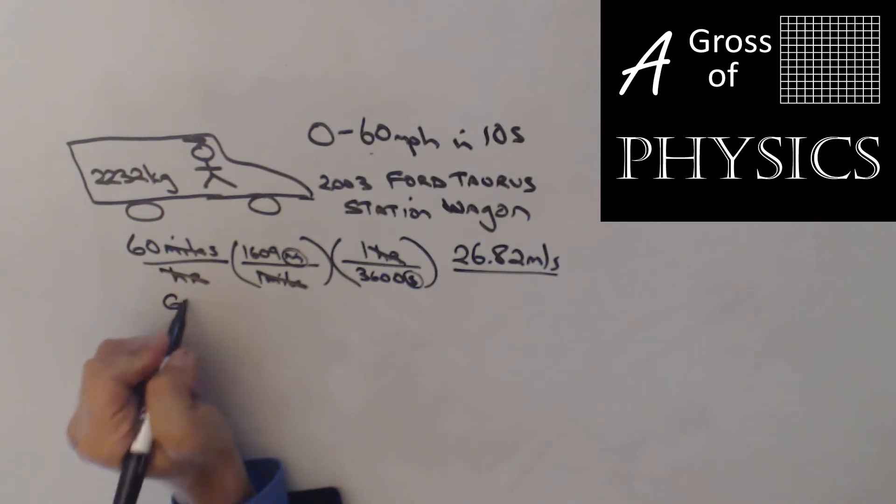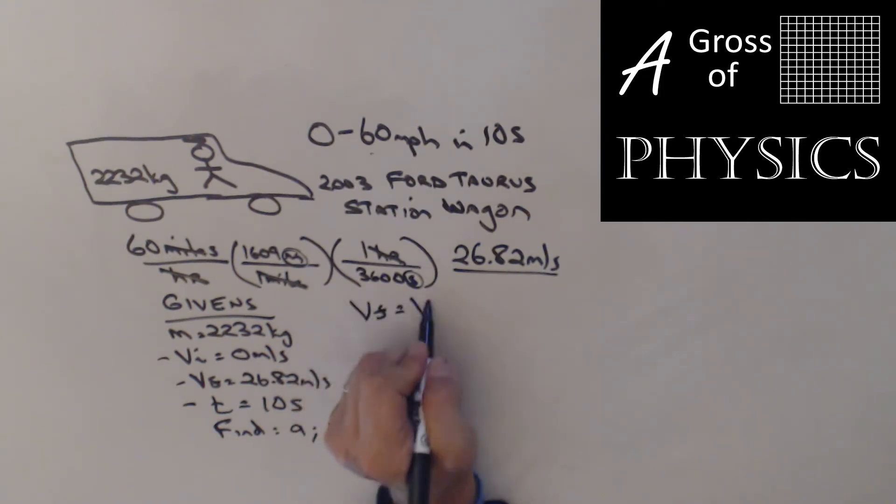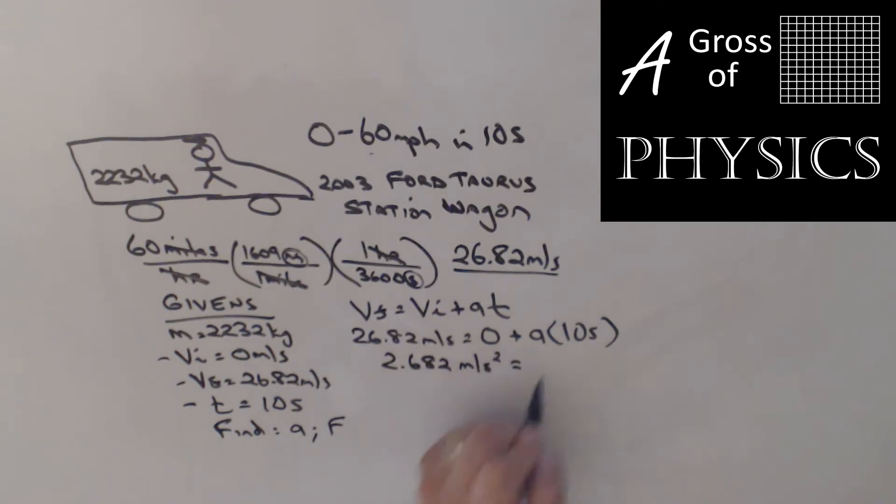Well, now we should be able to solve the problem. We start with our givens list. The mass is 2232. VI is 0. VF is 26.82. And time was 10 seconds. We're going to find A. And then we're going to find the force. Now with VF, VI and T, I'm going to use the third equation. VF equals VI plus AT. So 26.82 meters per second equals 0 plus A times 10 seconds. This math is pretty easy. I'm going to divide 10 into 26.82. So I'm going to get 2.682 meters per second squared equals A.